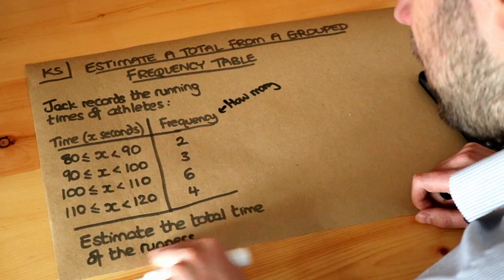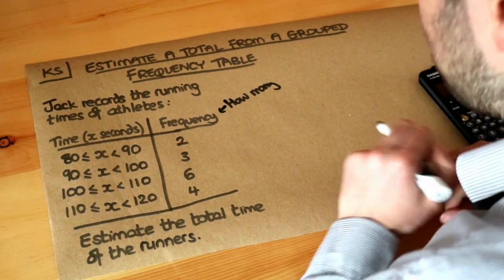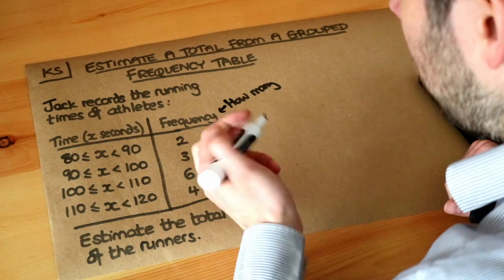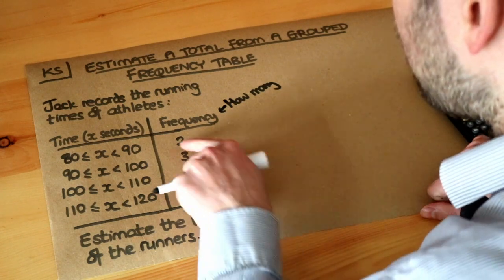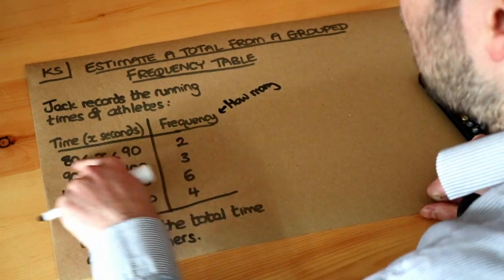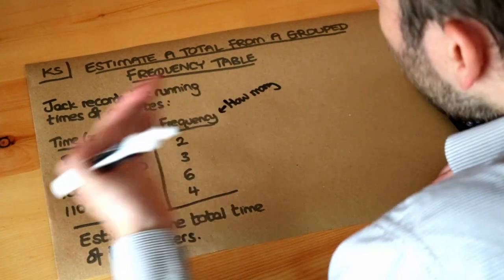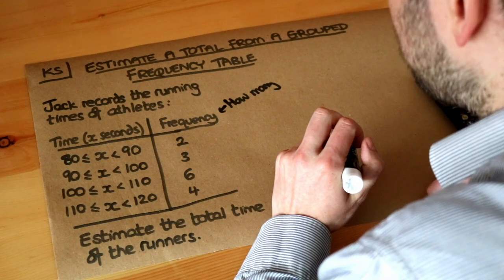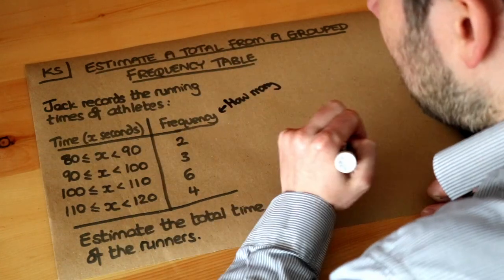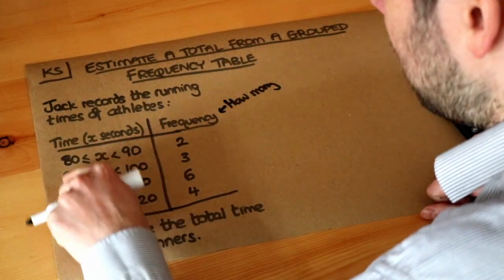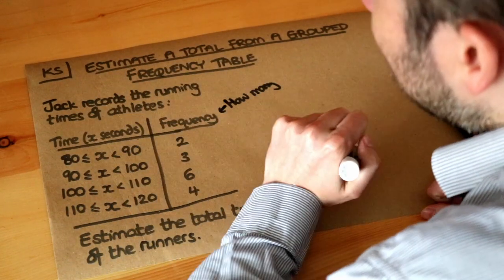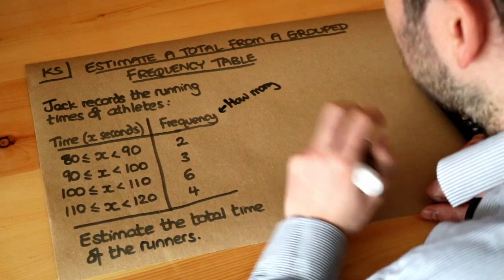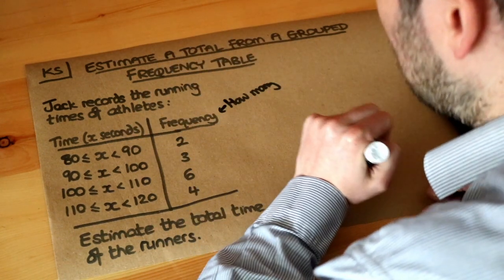We want to estimate the total time of the runners. Now the reason why we're estimating the time and not calculating the time is because for those two runners, we know each of them had a time between 80 and 90 seconds, but we don't know exactly what their times were. Because we don't know the original data, because it's grouped into these ranges, we can only estimate what the total time is. We can't actually work out the exact total time.